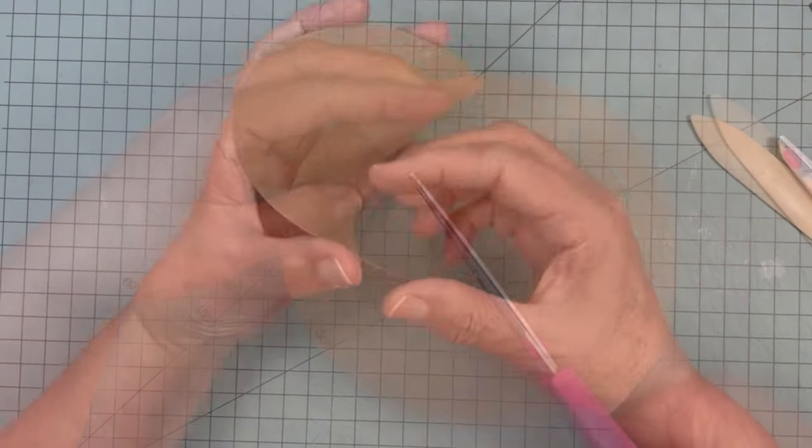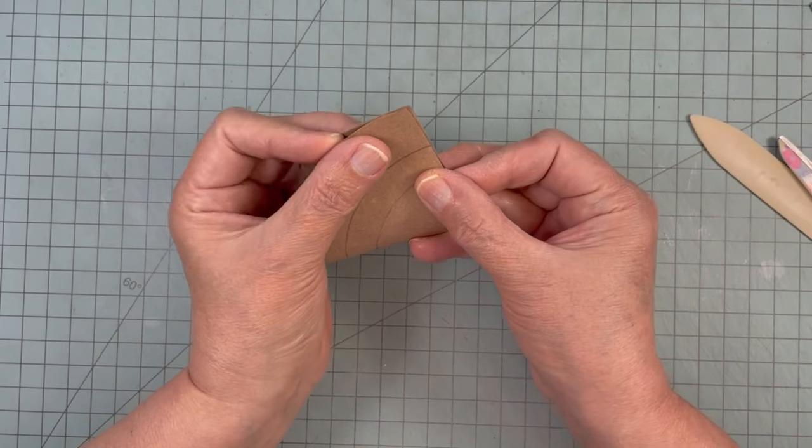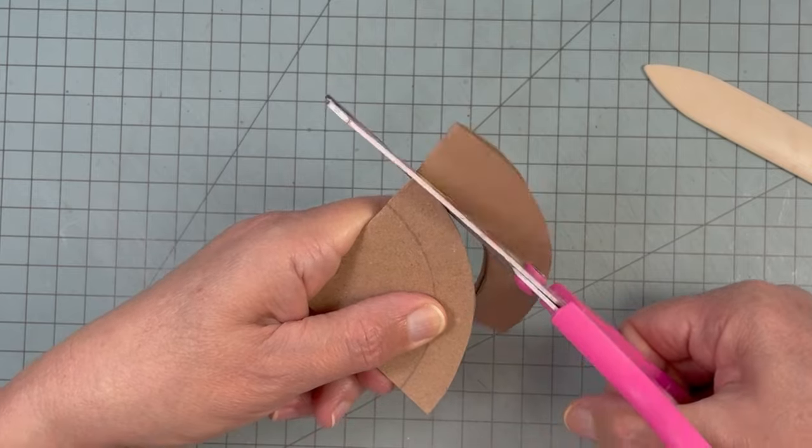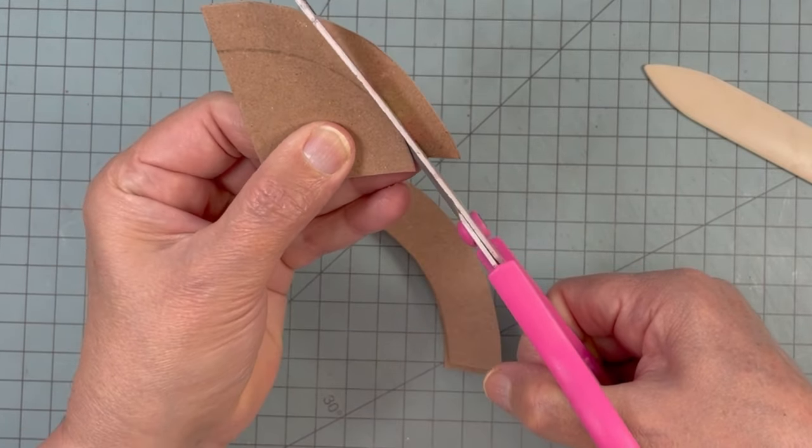I don't know why I folded that half in half. Don't do that, just cut on the lines to get your arches. Because the arches will help us make patterns that we can use over and over again in the future.